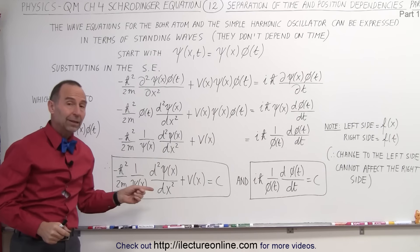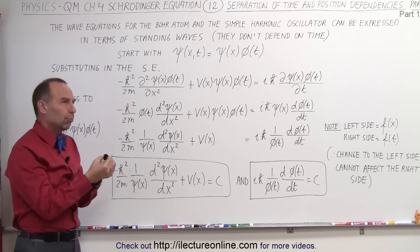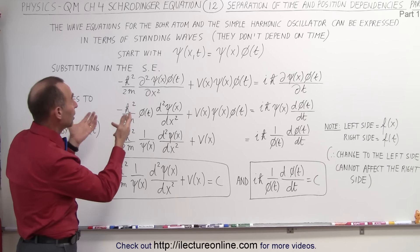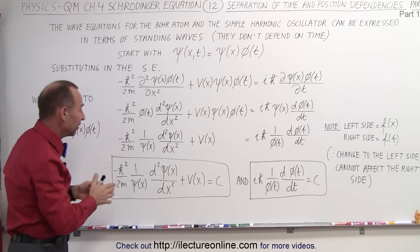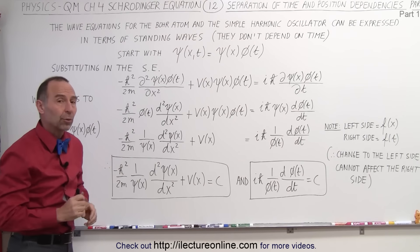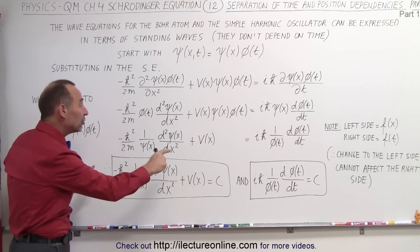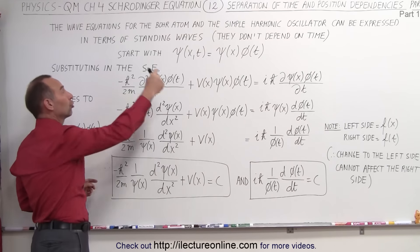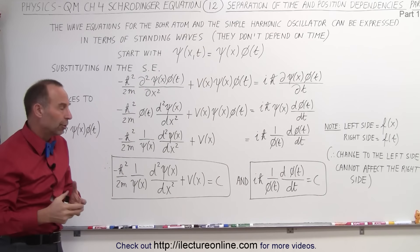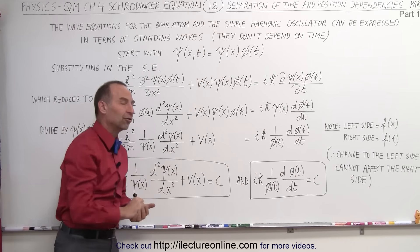Now, the two equations we end up with are a portion of the Schrödinger equation. In other words, they're a new form of the Schrödinger equation, and these will be a lot easier to solve than the original Schrödinger equation. It's a much easier format to solve these types of differential equations.